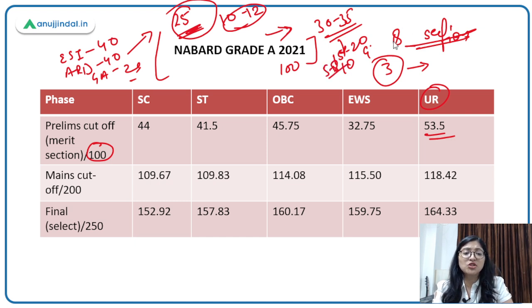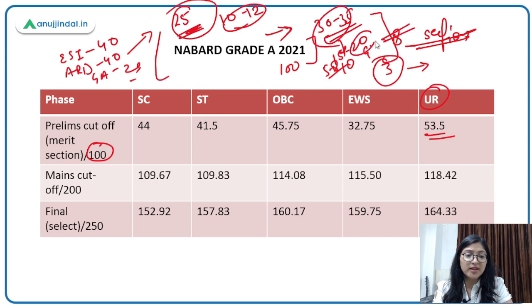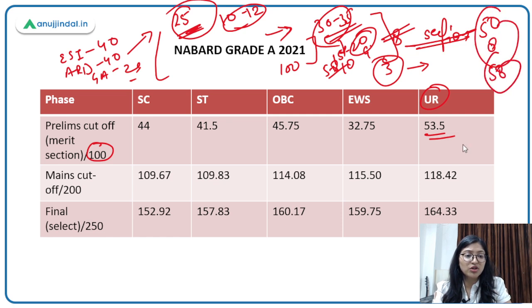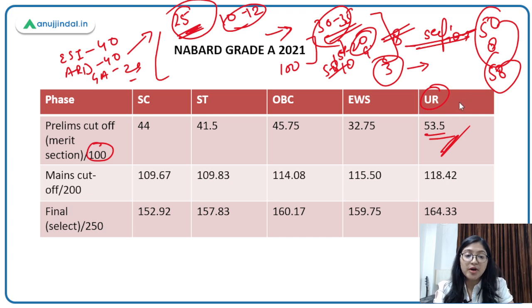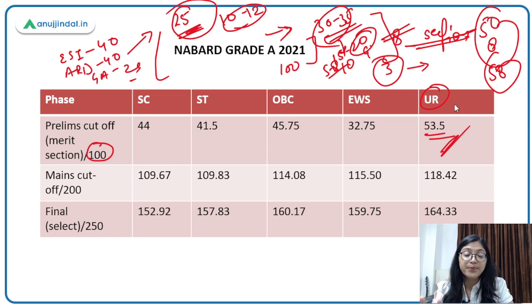Very easily your cutoff will be cleared. If you have 30 marks in ARD, 20 marks in ESI, and 8 marks in GA, that gives you 58 — well above the cutoff of 53.5. According to your strengths and weaknesses, you have to plan your strategy. The purpose is to give you an insight on what the cutoff is and how you should plan your preparation.